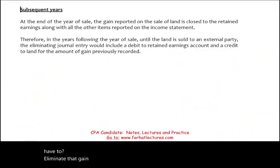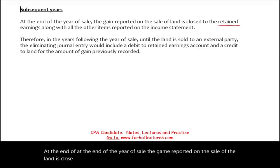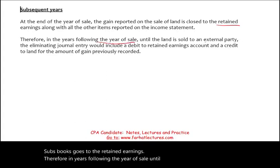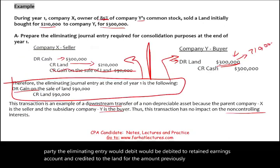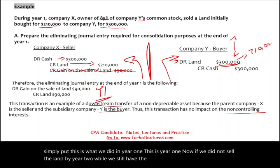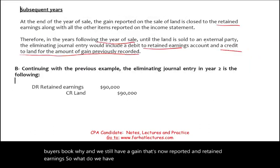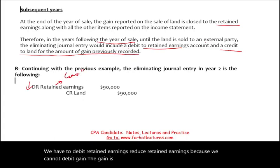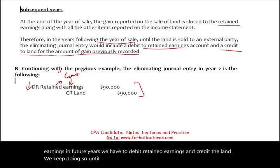At the end of the year of sale, the gain reported closes to retained earnings. Therefore, in years following the year of sale — until the land is sold to an external party — the eliminating entry debits retained earnings and credits land for the amount previously recognized ($90,000). We cannot debit gain anymore because the gain is now sitting in retained earnings. We keep doing this until the land is actually sold.